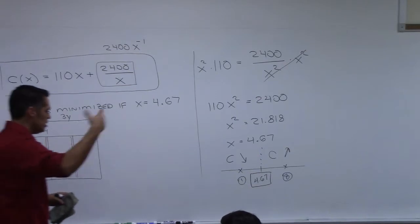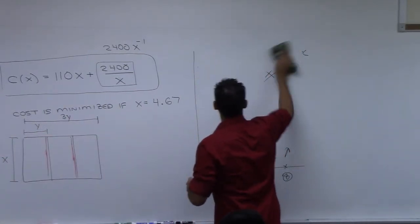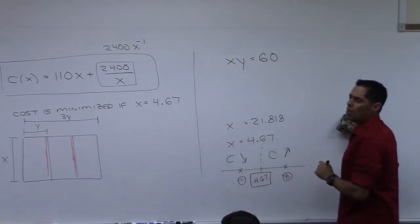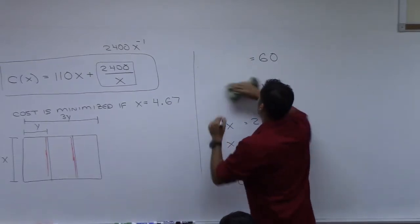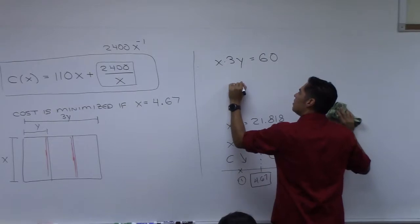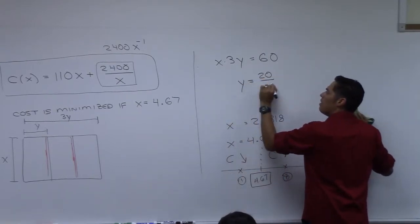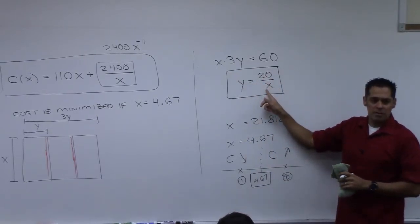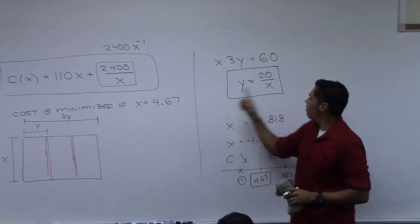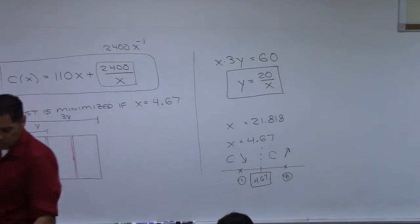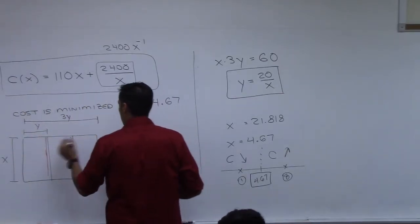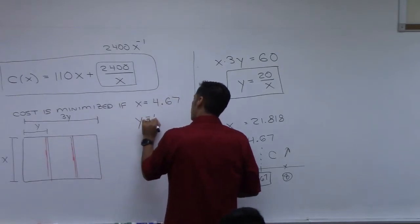From last class's work, we had the equation x times 3y equals 60, which means y equals 20 over x. So we plug in x equals 4.67: y equals 20 divided by 4.67, which gives approximately 4.28.